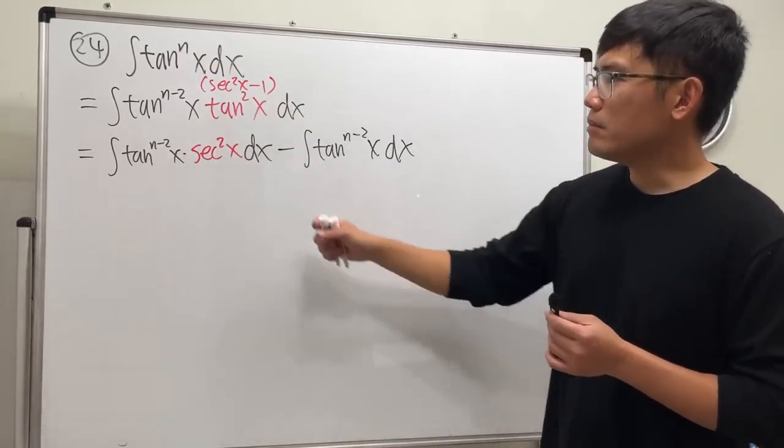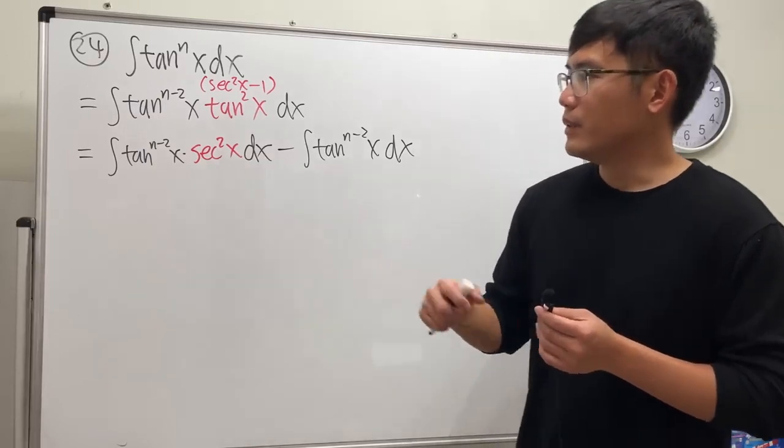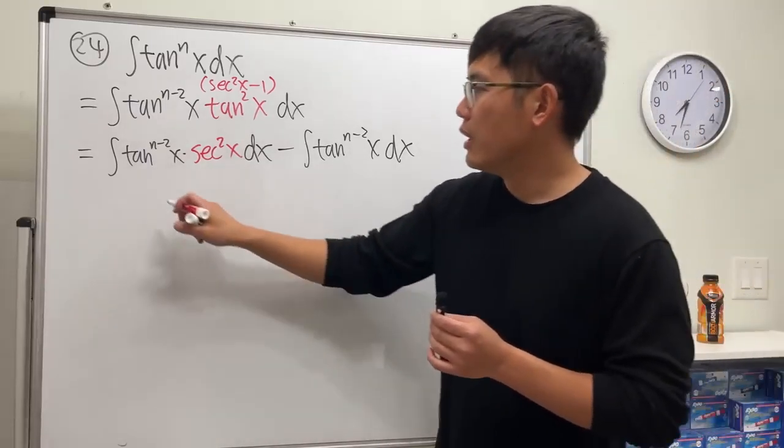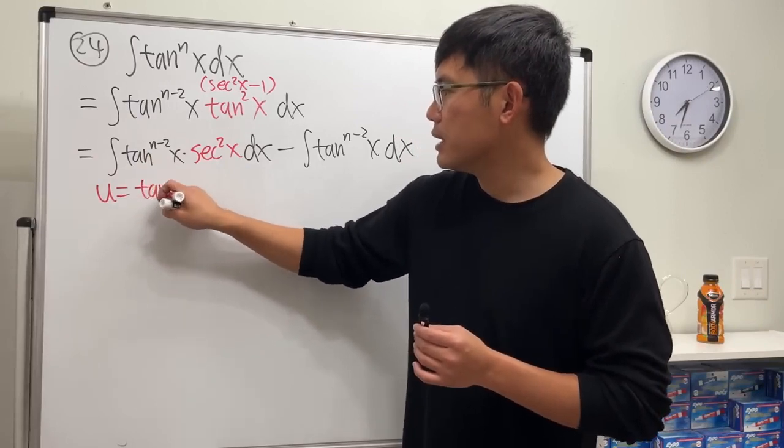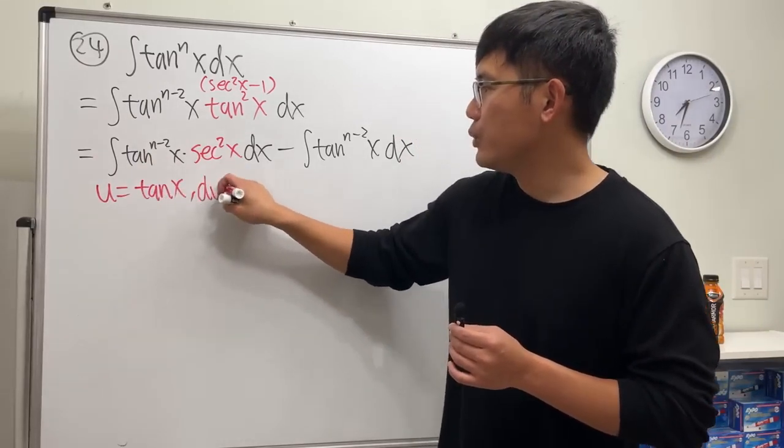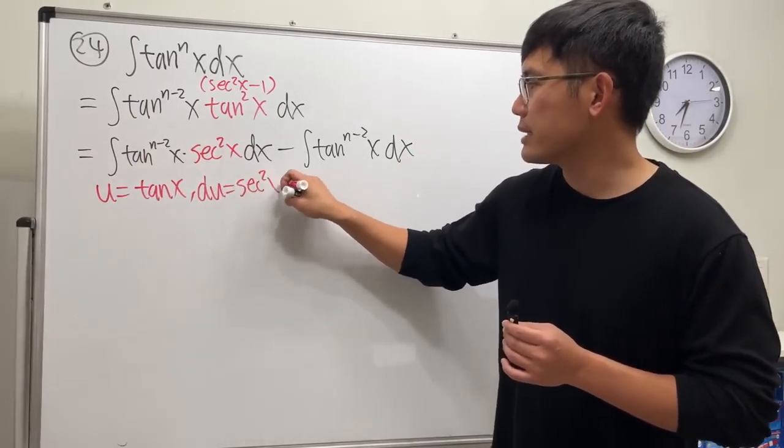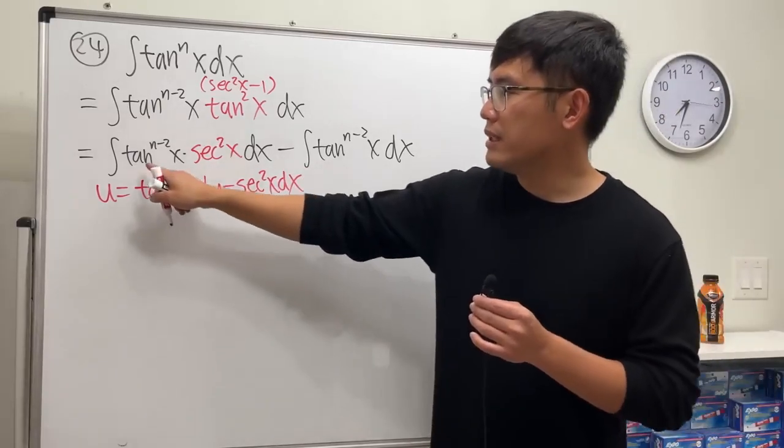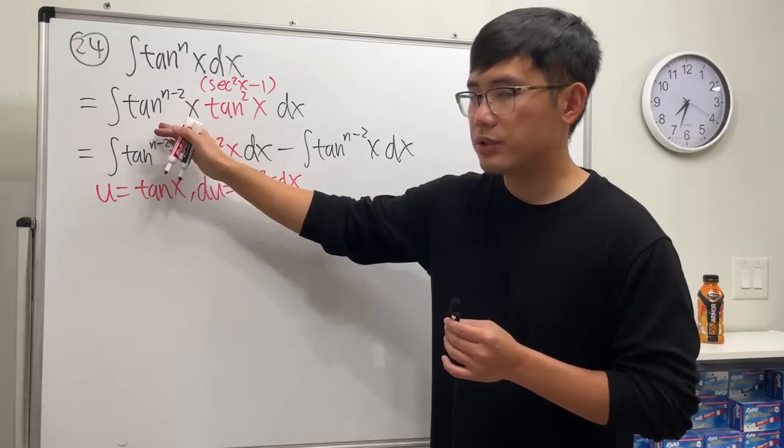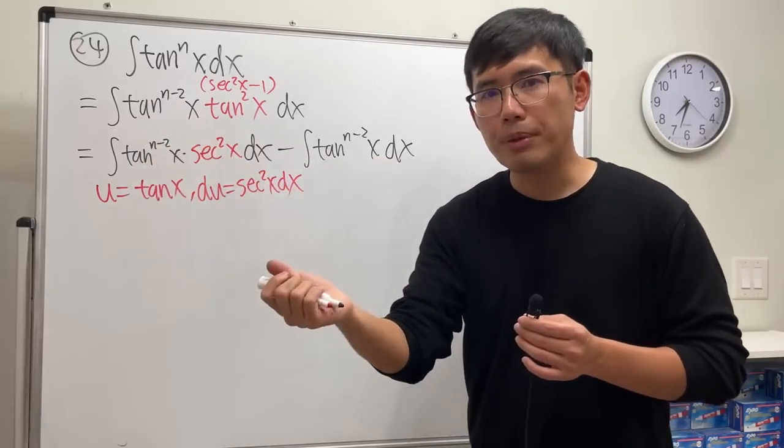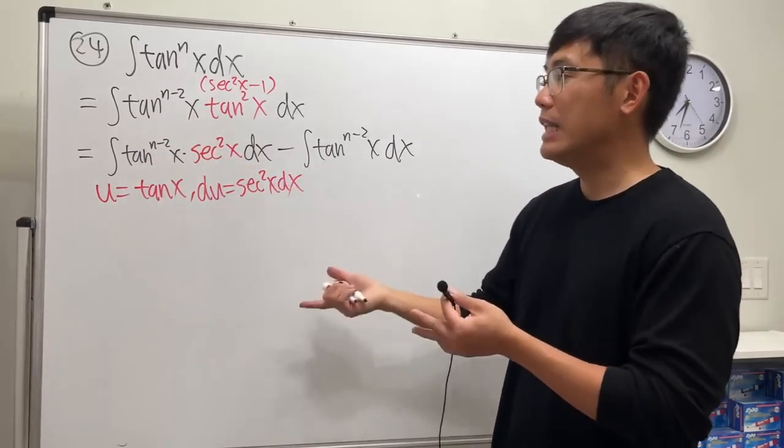But what's this? We can also integrate this pretty easily. We can just take a u sub. Let u be tangent x, and you see du is equal to secant square x dx. So we just have to integrate u to the n minus 2. We just add 1 to the power, becomes n minus 1, and divide it by the new power.